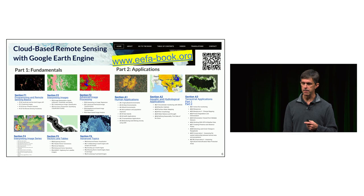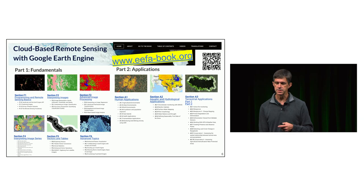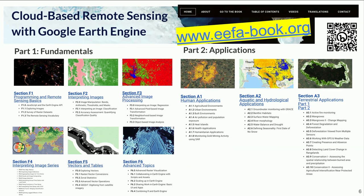Here's the first time anyone has seen the URL for the book: www.efa-earthenginefundamentalsandapplications-book.org. The sections are: F1 for absolute beginners, F2 for interpreting images and basics, F3 for advanced single-image applications, F4 for image collections, F5 for vectors and table use, and F6 for advanced topics. On the applications side, there are three domains: human applications, aquatic and hydrological applications, and terrestrial applications.